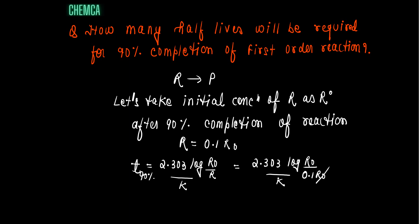R0 and R0 will be gone. That will be equal to 2.303 log 10 upon K.